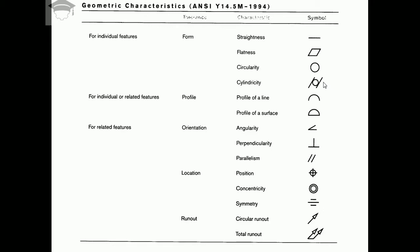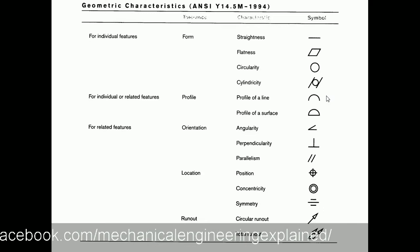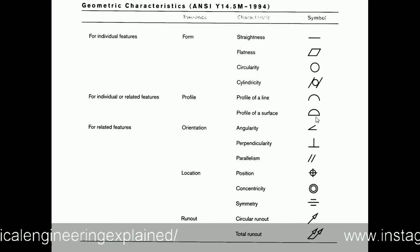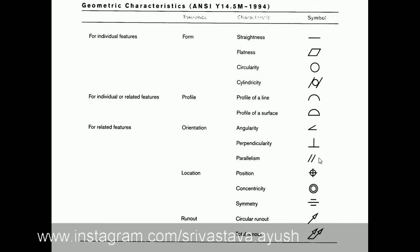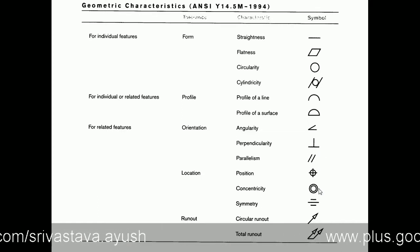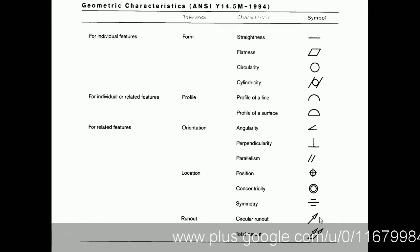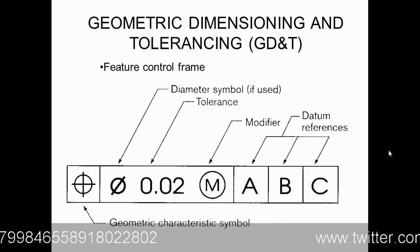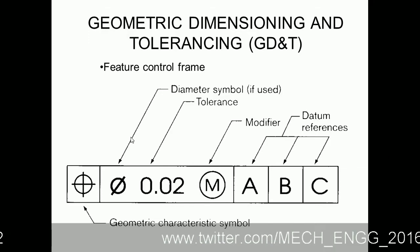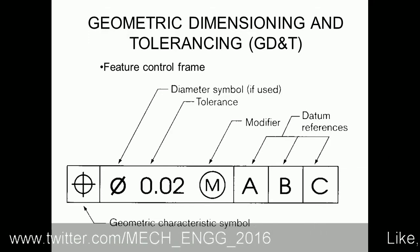Other symbols include profile of a line, profile of a surface, angularity, perpendicularity, parallelism, position, concentricity, symmetry, circular runout, and total runout. These are the main symbols used whenever we design a drawing.